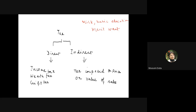In direct taxation, a part of income goes directly to the government. When purchasing land, you pay stamp duty, which is a kind of wealth tax. There is also gift tax — if the value of a gift exceeds a particular level, there will be a tax on that gift. These are examples of direct taxation.